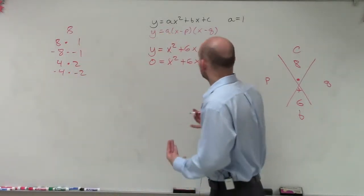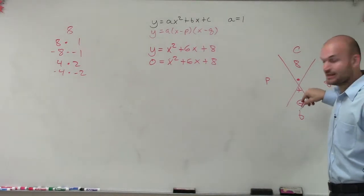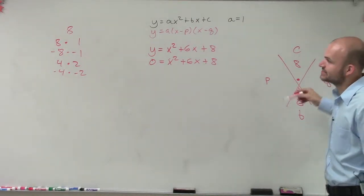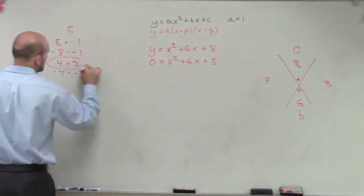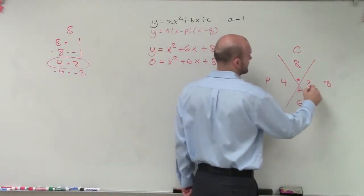So out of those, what values are going to add to give me my b, which is a positive 6? Well, you can see there's only one example, which is 4 and 2. So therefore I can say 4 and 2.